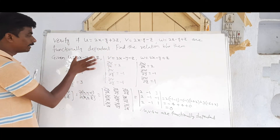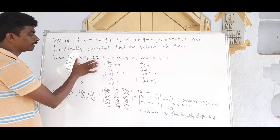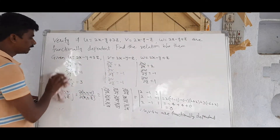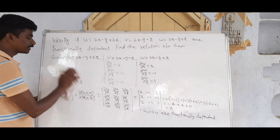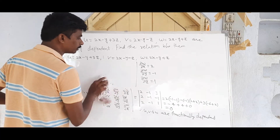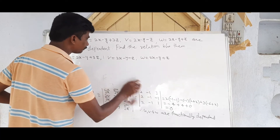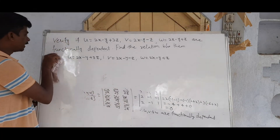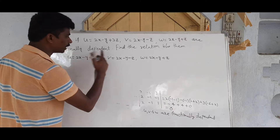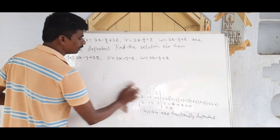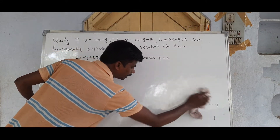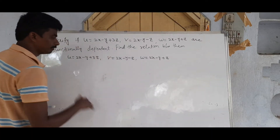To find the functional relation between u, v, and w, we try simple addition and subtraction of the given expressions to see if a relation emerges.